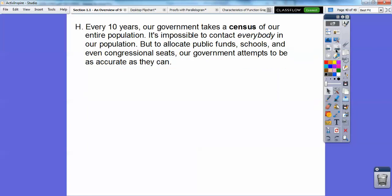Every 10 years, so we just had one in 2010, we've got another one coming up in 2020. Every 10 years our government takes a census of our entire population. It's impossible to contact everybody in the population. Some people don't have phones, some people are homeless. They can't contact everybody. But to allocate things like public funding, schools, things for like roads, and even congressional seats, our government attempts to be as accurate as they can. If you're looking for a job in 2020, that's a pretty good way to get your foot in the door of a government business.